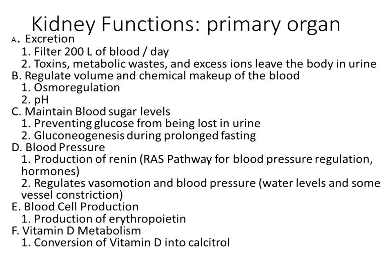The kidneys are our primary organ for excretion. Every minute, the kidneys receive about a quarter of your cardiac output — about 125 milliliters per minute out of five liters per minute. When you calculate that out, you should be filtering about 200 liters of blood per day through both kidneys. With four to six liters of blood in the body, your blood supply is being filtered roughly 50 to 60 times a day.